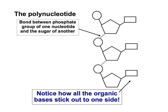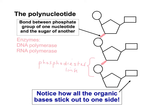The nucleotides can join together by condensation reactions, which are catalyzed by enzymes. These condensation reactions take place between the phosphate group of one nucleotide and an OH group on the pentose sugar of another nucleotide. This forms a phosphodiester link — a strong covalent bond which holds the nucleotides together, forming a sugar-phosphate backbone. The organic bases always stick out to one side.